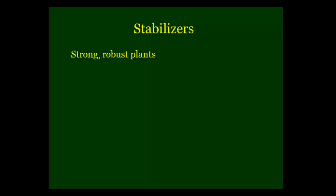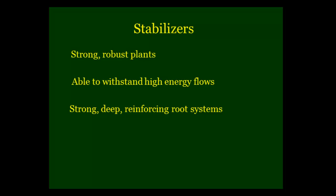Stabilizers, on the other hand, as the name implies, are the big, strong, robust plants. These are the plants that can stand up to high energy flows — we're talking 10, 20, 30, perhaps 50-year events. That's how strong-rooted they are. Very, very strong, deep, binding, reinforcing root systems. So these are the plants that dissipate energy and protect those banks during high flows, during these floods that come through.